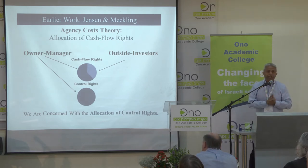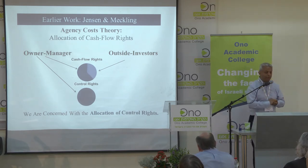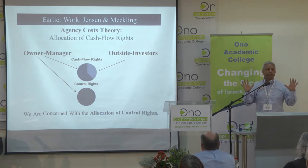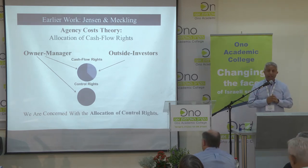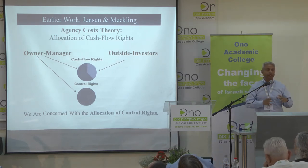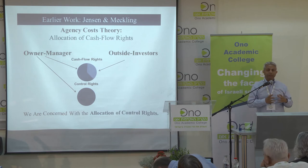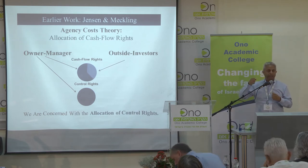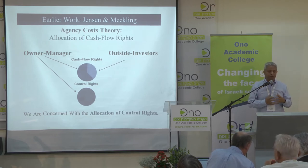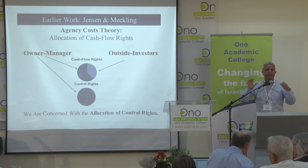Starting with the earlier work — the most famous work is, of course, Jensen and Meckling's 1976 paper — for almost 40 years, agency cost theory has been dominating corporate law. Their theory is about allocation of cash flow rights. In their model, there is an owner-manager who will get outside capital but will keep 100% of control rights. The agent has 100% of control rights; there is no division of control rights. The only thing that you divide is cash flow rights.